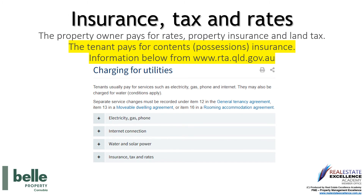During your tenancy agreement, it is your responsibility to pay for your own contents and possessions insurance. Refer to the terms of the agreement in relation to electricity, gas, phone, internet, water, or solar power, to ensure you are aware of all your responsibilities for connections of such services. The property owner pays for rates, property insurance, and land tax. Our agency strongly recommends that you ensure you have contents and personal possessions insurance.